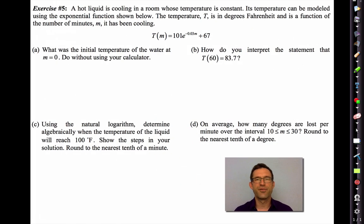Exercise number five, our final exercise. A bit more of a modeling problem here. A hot liquid is cooling in a room whose temperature is constant. We're going to work a lot more with this in a few more lessons. Its temperature can be modeled using the exponential function shown below. The temperature T is in degrees Fahrenheit and is a function of the number of minutes M. It has been cooling. So there it is. There's my temperature function.